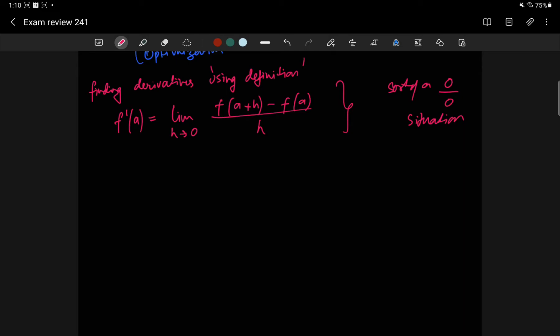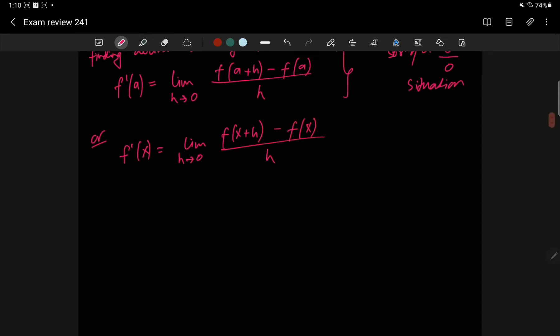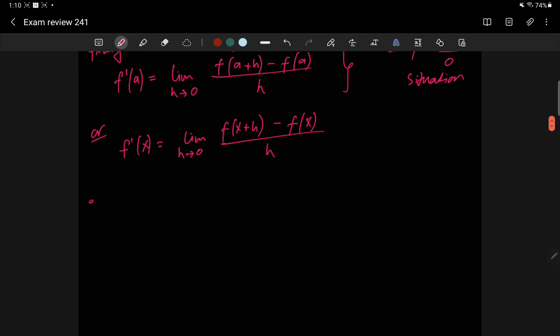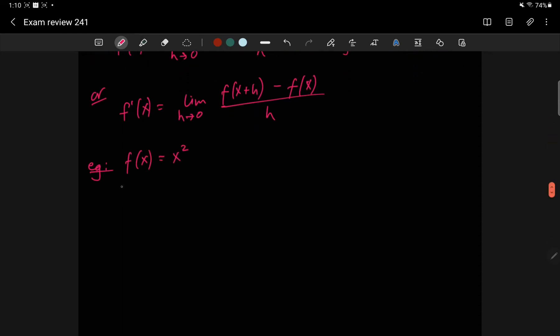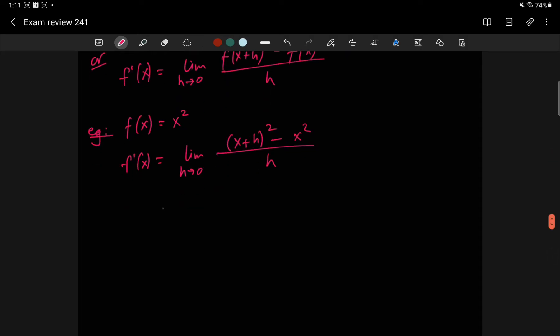We can mess with the notation a little bit and just write it as f prime x instead of a to get the more familiar form. Some common examples would be like the one I said. Let's say f of x is x squared. Then f prime of x would be the limit h going to 0, x plus h squared minus x squared over h. So this is definition. You have to write this down each time. And then you look for strategies to simplify this.